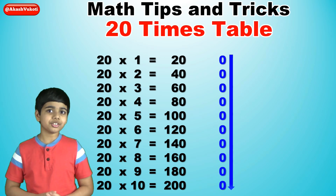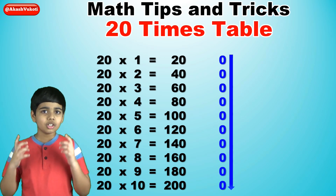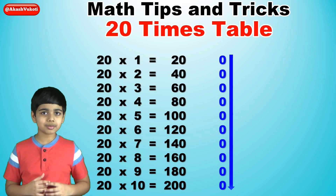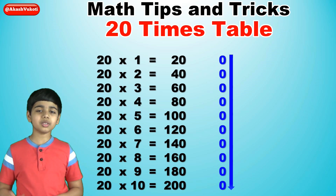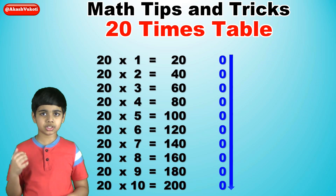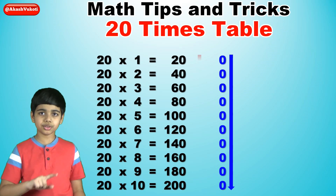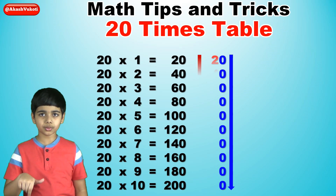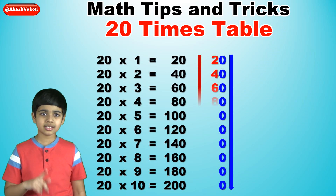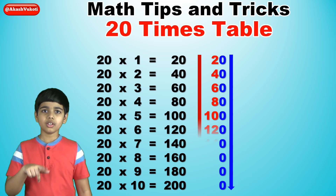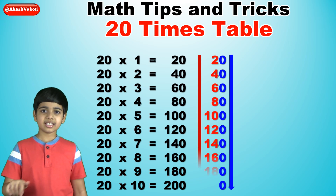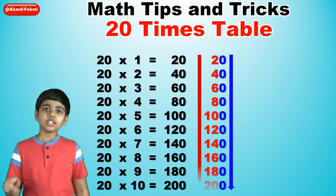Next, for the 10s digits, we just write the 2 times table from 2 times 1 to 2 times 10. So: 2, 4, 6, 8, 10, 12, 14, 16, 18, 20.